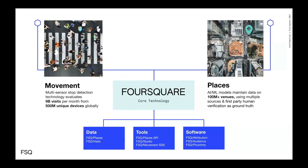So Foursquare — you may know us from our early days as a consumer app, and we still do offer consumer mobile apps. But right now our focus is on curating and offering rich data sets of geographic information: our movement data set and our places data set. I'm going to talk mostly about the places data set, which has over 100 million different highly curated records of venues, points of interest, stores, and landmarks — everything you might want to know about in the world — using both machine approaches and human verification to ensure data quality is high.